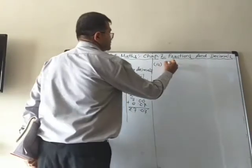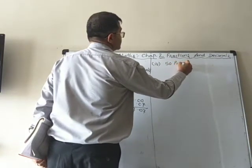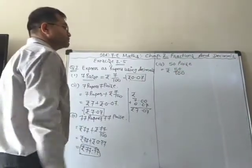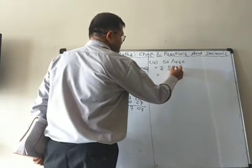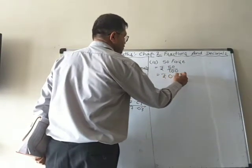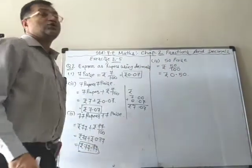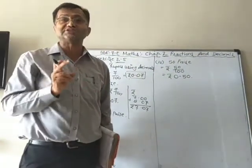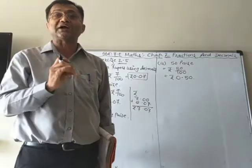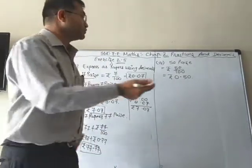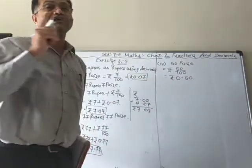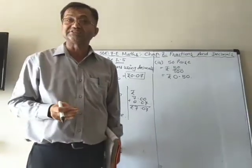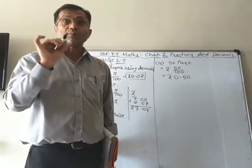Fourth one is 50 paise. 50 paise means rupees 50 upon 100. Two decimal places gives rupees 0.50. Here the zero is necessary. When we are talking about rupees and paise, we keep 2 digits after the decimal, so we don't cancel that zero. Write it as rupees 0.50.